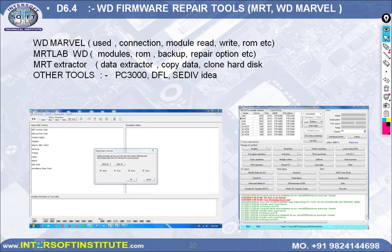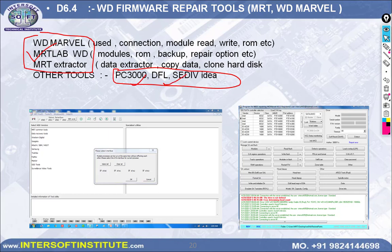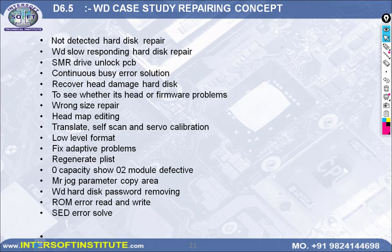Then we go to WD Marvel, MRT, and MRT Data Extractor — three tools explained in detail. Other tools are shown as examples; after learning these, you can use any tool easily. Then case study: not-detected hard disk, WD slow hard disk, what is an SMR drive, unlock PCB functions — basic case studies are covered with ready-made videos.